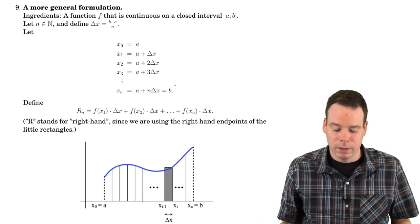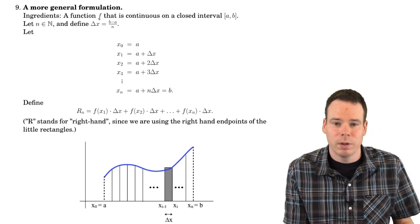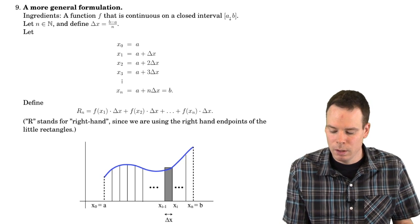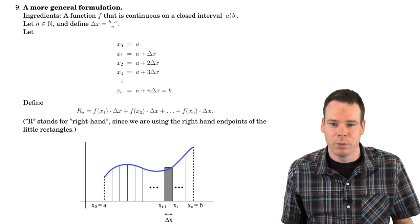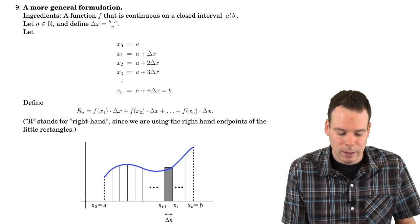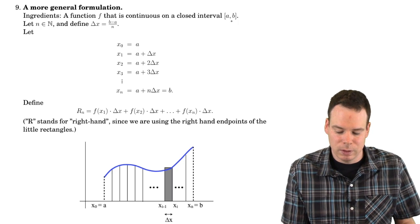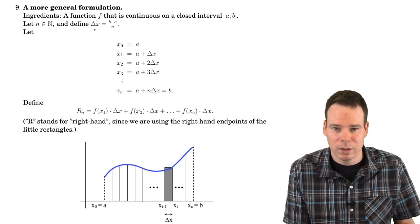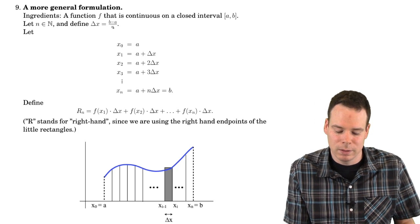I just want to summarize this process now. We started with a function f, continuous on some interval a to b. In our particular case f was the squaring function and the interval was 0 to 3, but now we're going to look at a more general situation. We slice up that interval into n subintervals. If our original interval had length b minus a, then the width of each subinterval would be b minus a over n, because we've sliced it up into n equal-width subintervals.